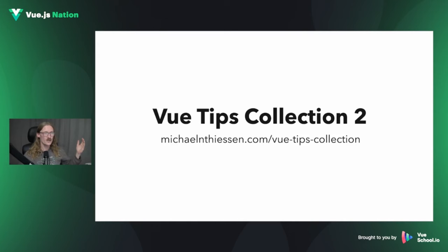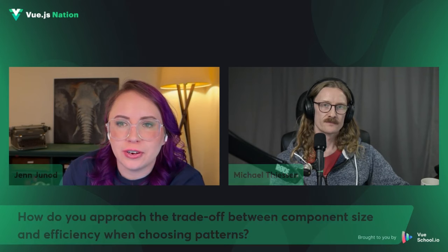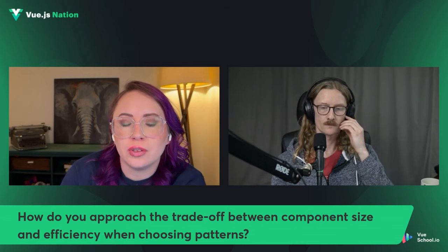The Q&A portion begins, with a host noting Michael's book is very pretty. The first question: how do you approach the trade-off between component size and efficiency when choosing patterns? Michael notes this is one of the harder questions to answer because the answer is 'it depends.' On performance efficiency, component size probably doesn't make a significant difference except in very specific circumstances.